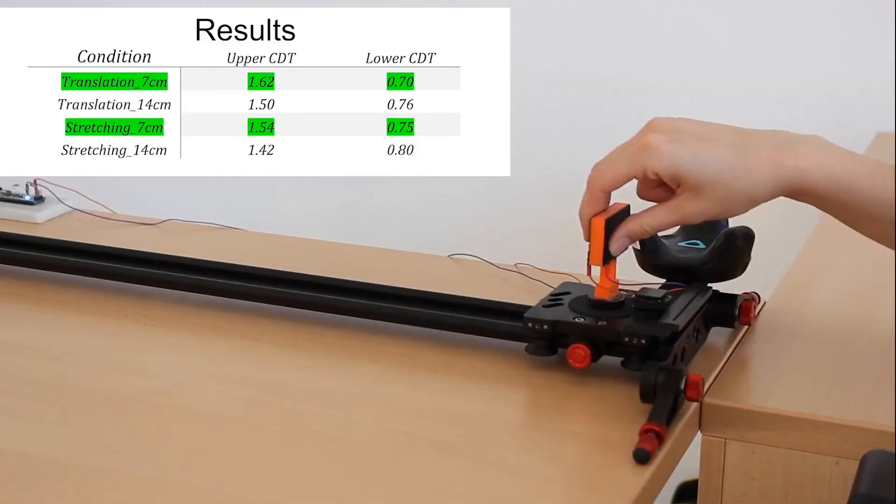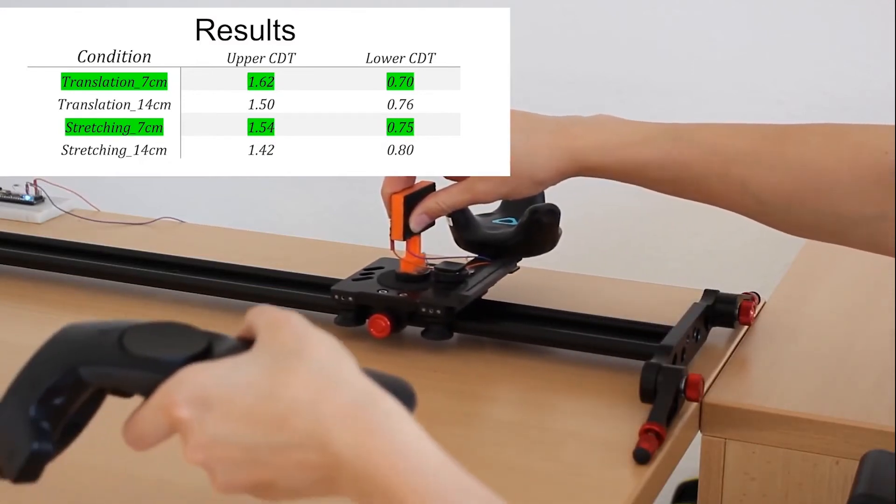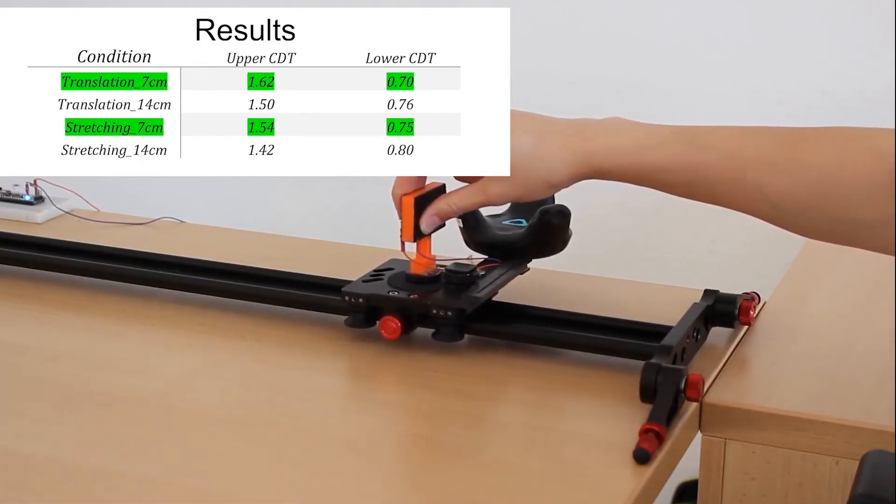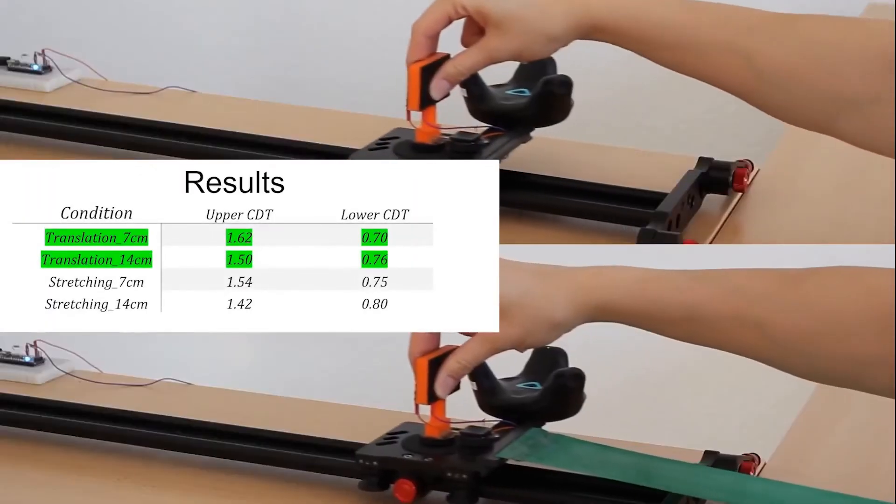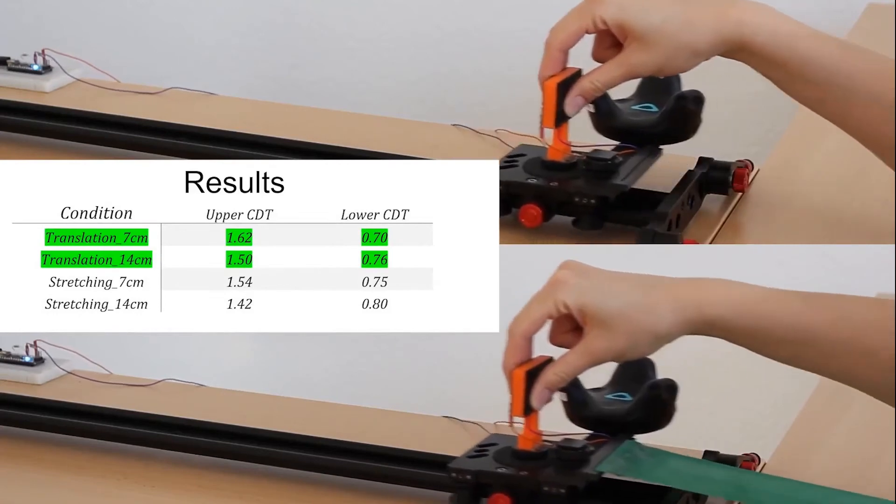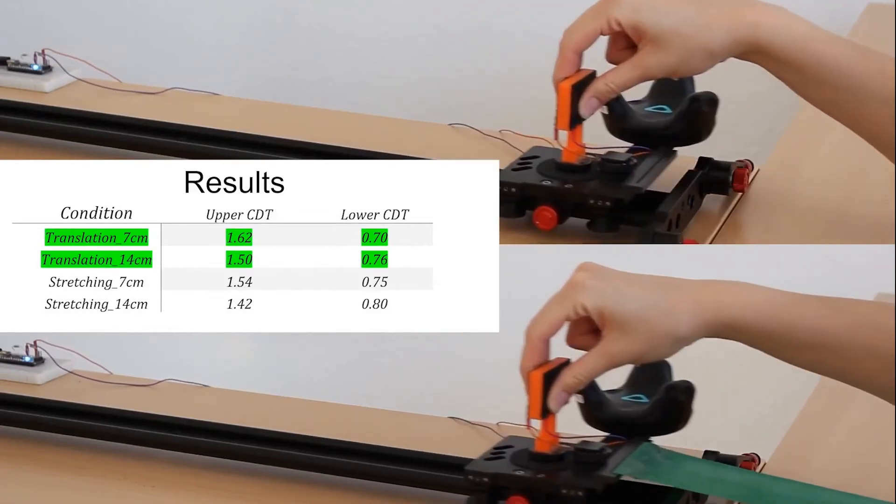Our results show that we can introduce quite substantial offsets which cannot be detected by a user. Further, we identified that travel distance significantly affects the detection thresholds, showing that smaller distances allow for higher manipulation factors. Moreover, linear stretching seems to support proprioception, leading to significantly lowered thresholds than in the translation-only condition.